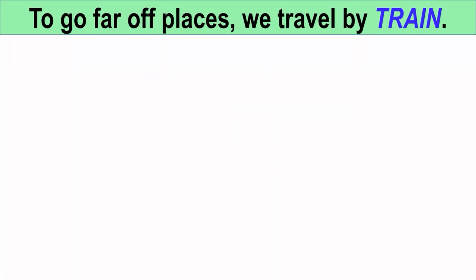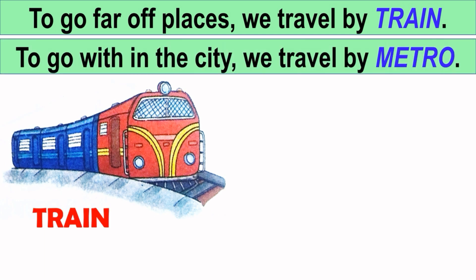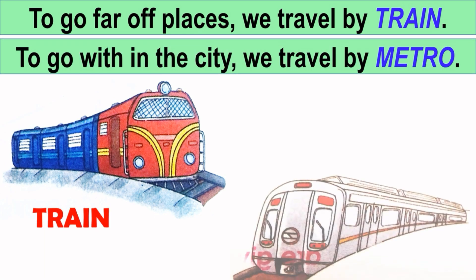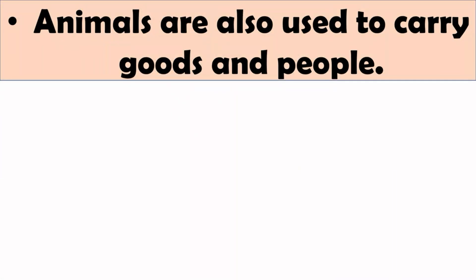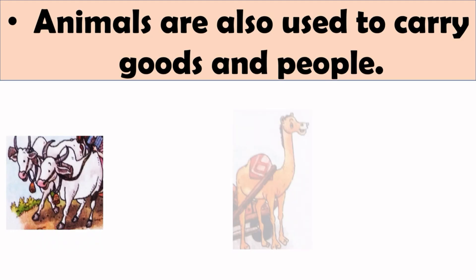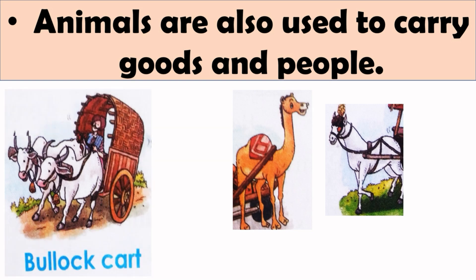To go to far-off places, we travel by train, and to go within the city, we travel by metro. The train that carries goods is called a goods train. Animals are also used to carry goods and people. Bullocks, camels, and horses are used to pull carts, like bullock carts. You can see bullock carts in the plain areas or in the villages, and they are used to carry people and goods.